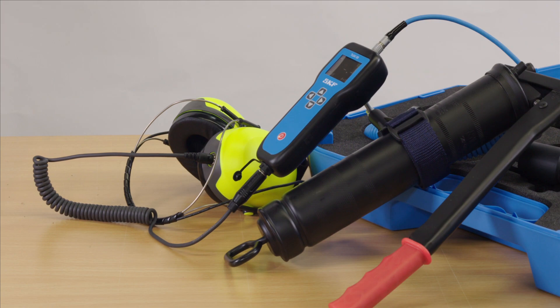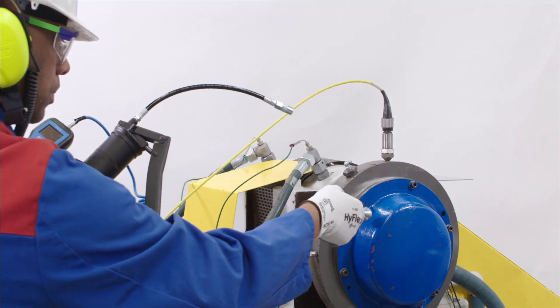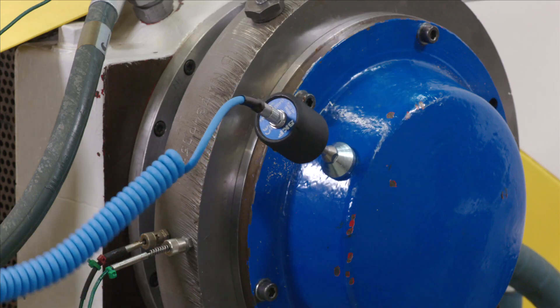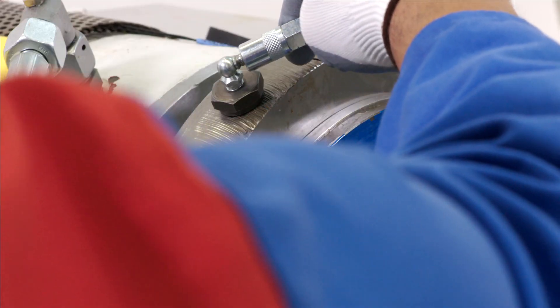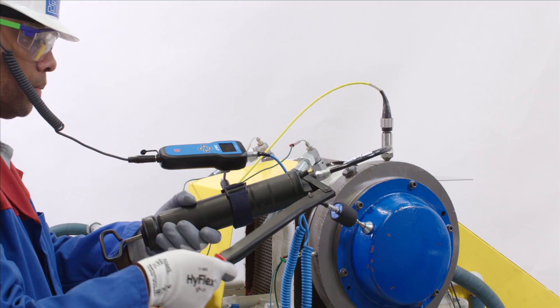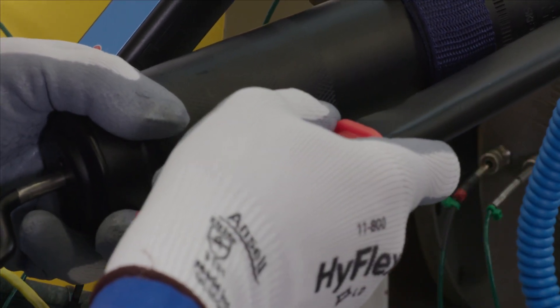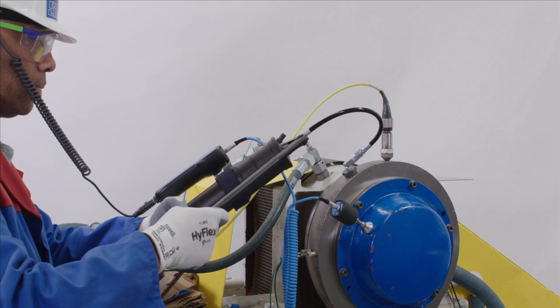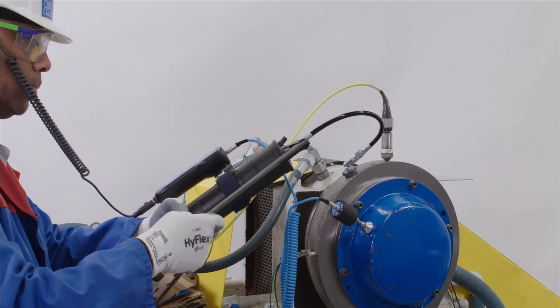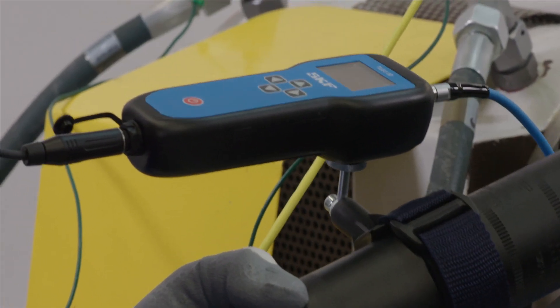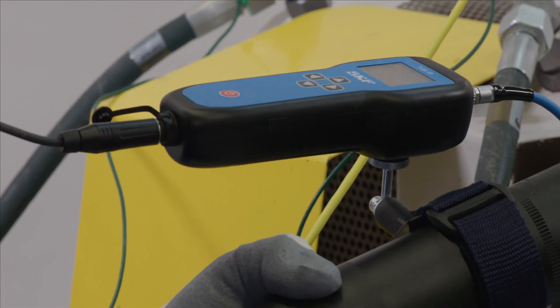Place the ultrasonic sensor onto the measurement point and connect the grease gun to the lubrication point. First, adjust the amplification for each point. Use the up and down arrows to increase and decrease amplification until a smiley indicates when the correct amplification level is reached.